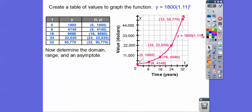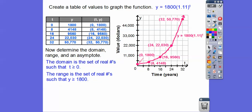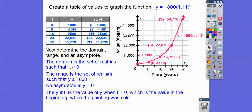What's the domain and range? The graph doesn't go left past 0, and it does equal 0, so the domain is t is greater than or equal to 0. The range starts at 1,800 and goes up, so y is greater than or equal to 1,800. An asymptote would be y equals 0. The y-intercept represents the value of the painting when it was first sold — that $1,800 when t equals 0.